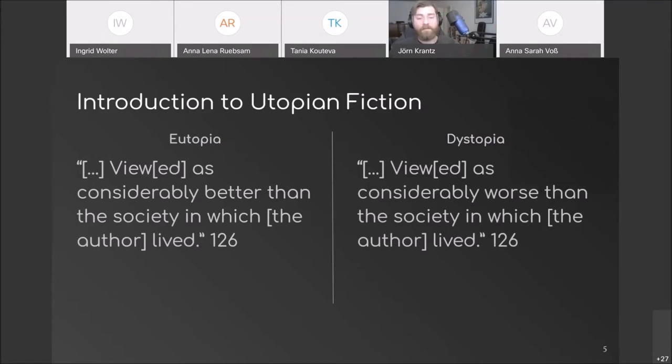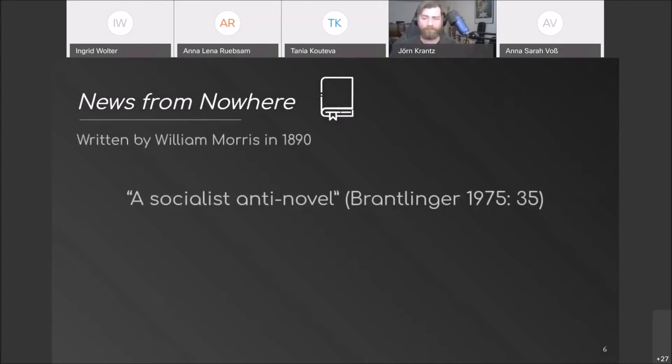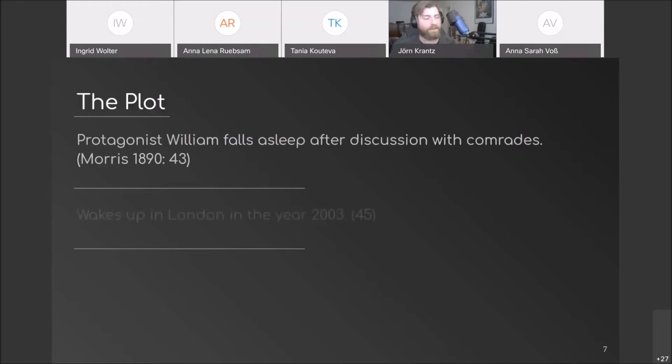Let's now look at a prime example of a utopia, namely News from Nowhere. It was written by William Morris in 1890 and can be described as a socialist anti-novel which confronts the cruelties and hardships that came with early industrialization and capitalism. It is a utopian daydream that does not adhere to the usual conceptions of novels. In it, we follow William, who after a discussion with his anarchist comrades falls asleep and wakes up in the London of the future. After wandering about for some short time, he meets Richard Hammond, who we will get to know as Dick.